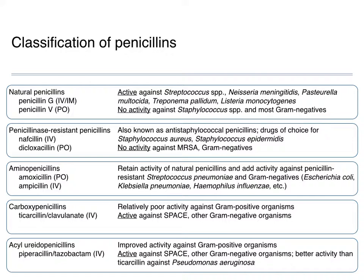Because natural penicillins are not active against staph, we developed the antistaphylococcal or penicillinase-resistant penicillins. Nafcillin is the IV version and dicloxacillin is the oral version. These are not subject to hydrolysis by penicillinase enzymes, so they have activity against Staphylococcus aureus and Staphylococcus epidermidis, with some strep coverage as well. Dicloxacillin is particularly used for skin infections where staph is an important cause, such as uncomplicated cellulitis. There is no activity against MRSA, however, and poor activity against gram-negatives.